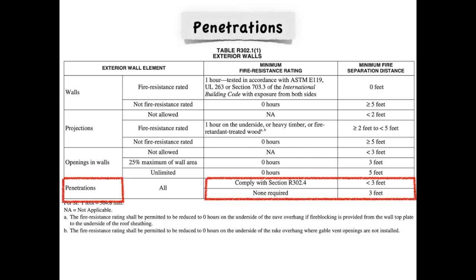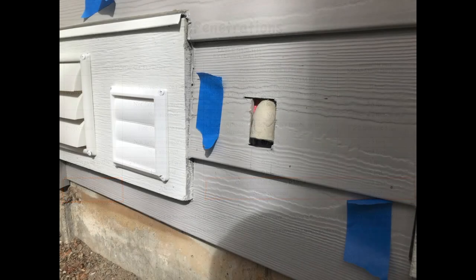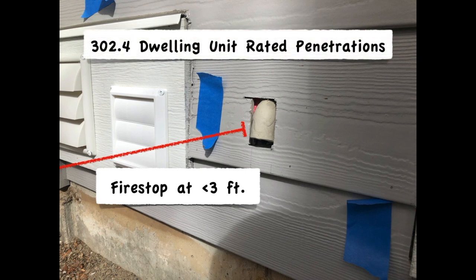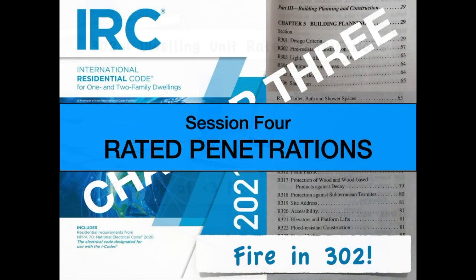Penetrations are pretty simple in this table in general. If they have less than three feet of fire separation distance, they must be fire stopped in accordance with section 302.4 for dwelling unit rated penetrations. I'll go over fire stopping in session four of this course — and here's a hint: it's not the same as fire blocking.